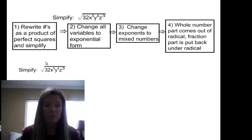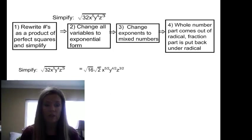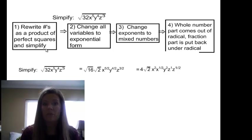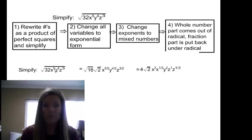So here's our problem: simplifying the square root of 32x to the fifth y to the fourth z cubed. The first thing I do according to Step 1 is rewrite the numbers as a product of perfect squares. I've rewritten 32 as the square root of 16 times the square root of 2. I've also gone ahead and done Step 2, changing all variables to exponential form.